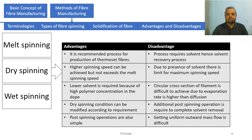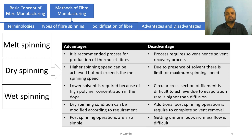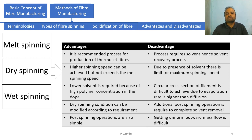The fourth advantage of dry spinning is that spinning conditions can be modified according to requirement. Processing parameters like concentration, time, and temperature can be altered to modify fiber properties. The fifth advantage is that post-spinning operations are very simple — removal of solvent by hot air application, stretching or drawing, and application of spinning finish are all relatively simple post-spinning operations.